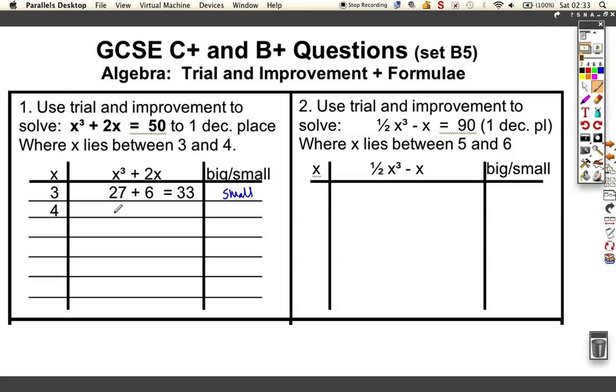If you put in 4, 4³ is 64 plus 2 lots of 4, which is 8, comes out 72. That's clearly too big. What you've done here is you've sandwiched the answer between 3 and 4, so we know we've got the answer somewhere between.